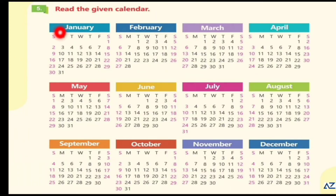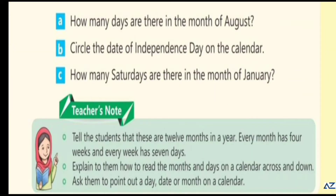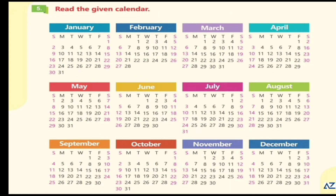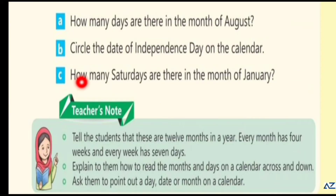Read the given calendars. January, February, March, April, May, June, July, August, September, October, November, December. How many days are there in the month of August? Thirty-one days. Circle the date of Independence Day on the calendar — Fourteen August. How many Saturdays are there in the month of January? Five Saturdays.